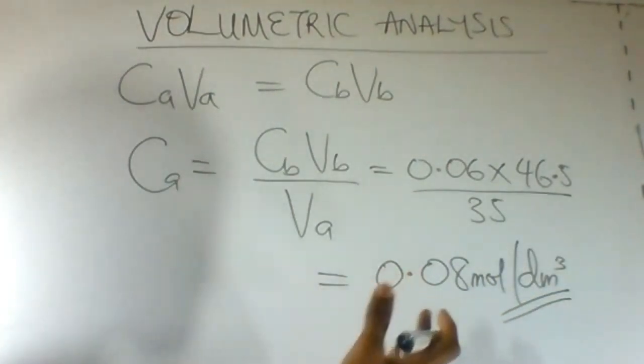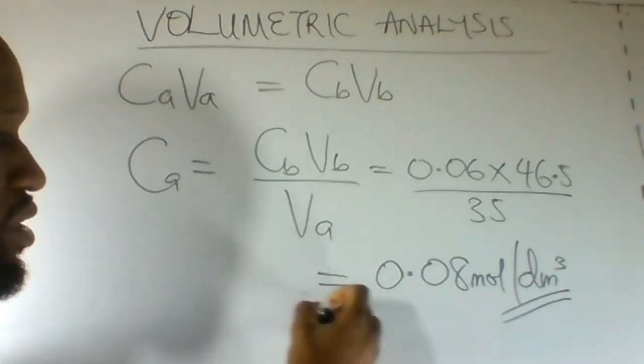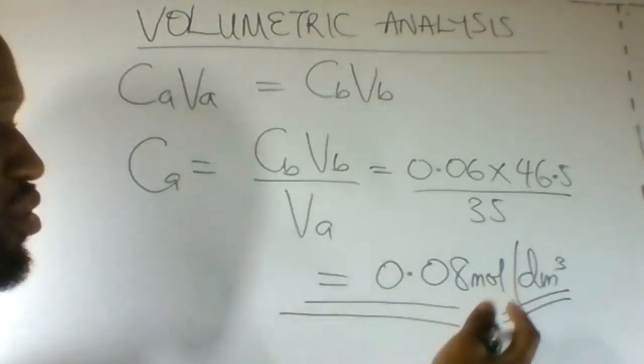So our first answer, concentration of the acid in moles per dm cube, is 0.08 mole per dm cube.